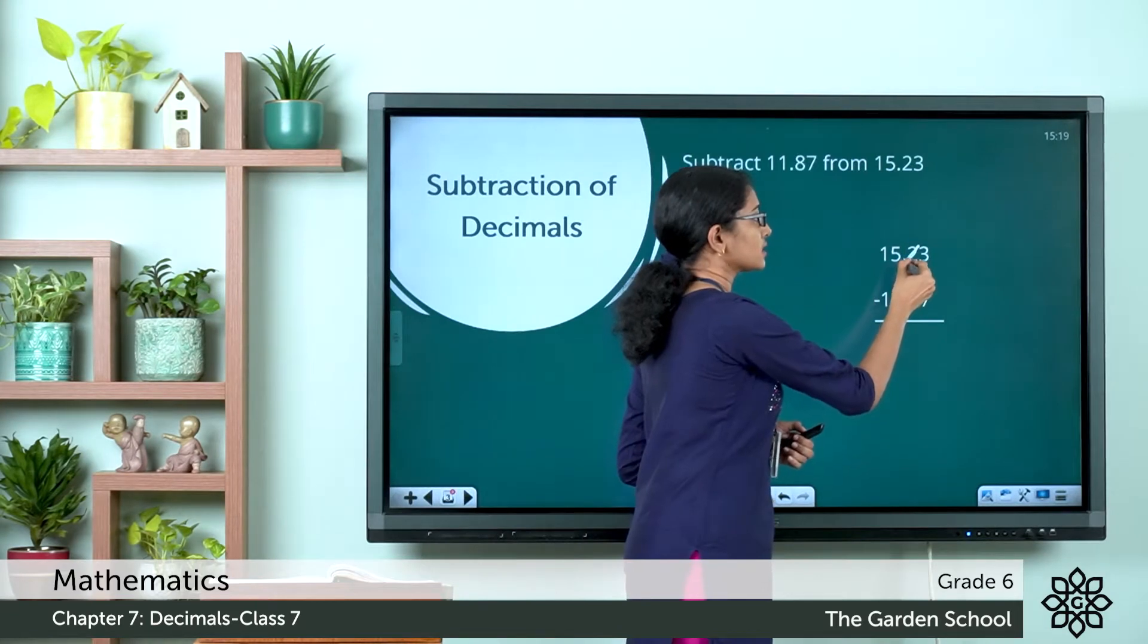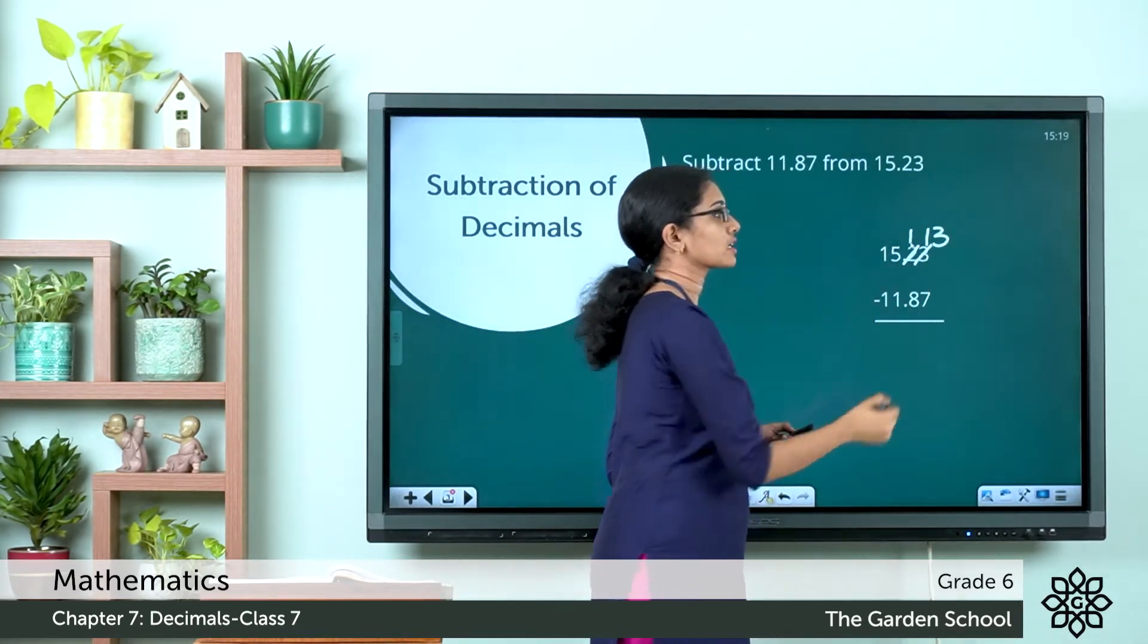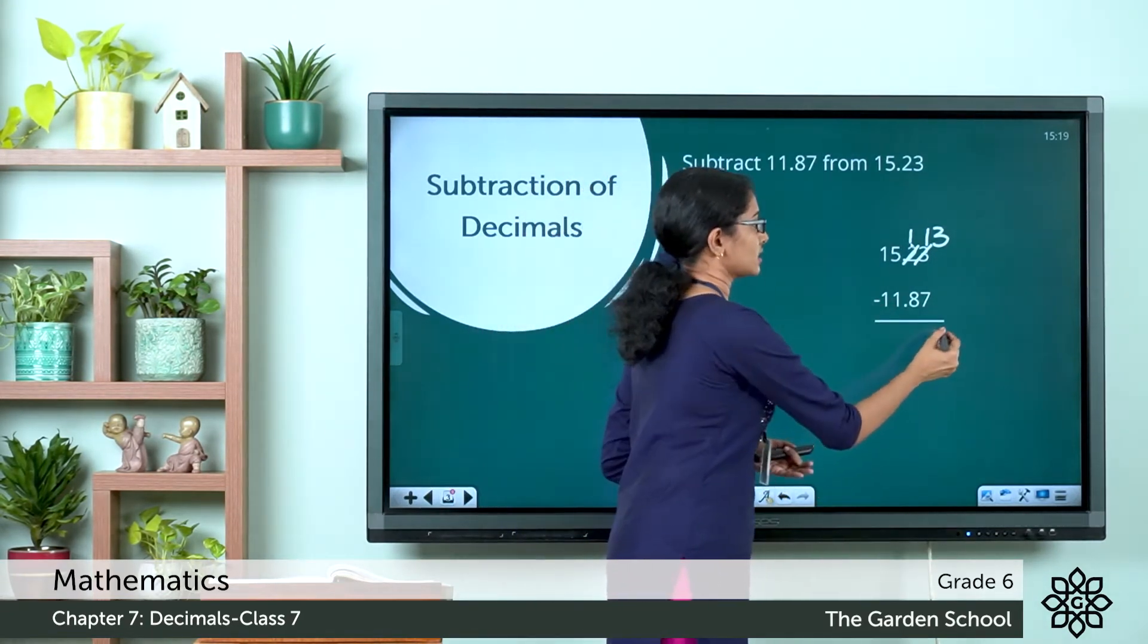So let's borrow 1, 10 from here and this becomes 13 and here it becomes 1. So 13 minus 7, it is 6.